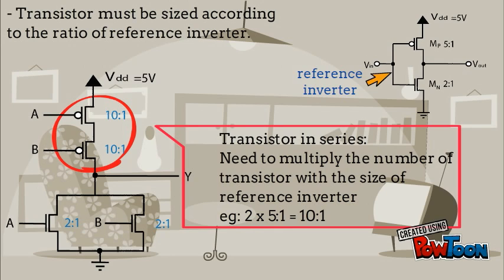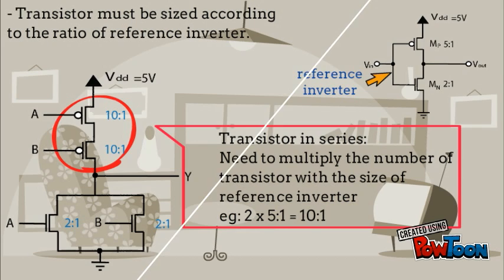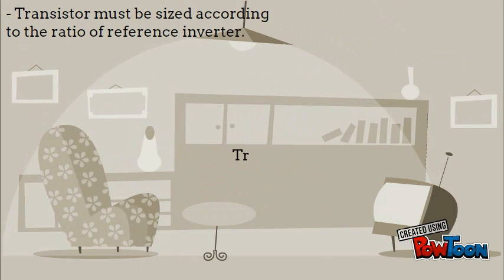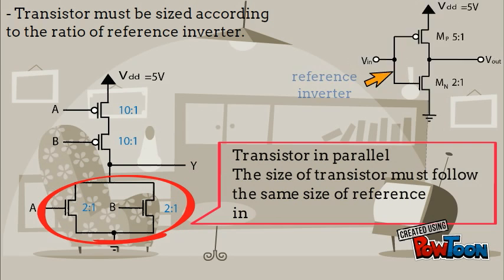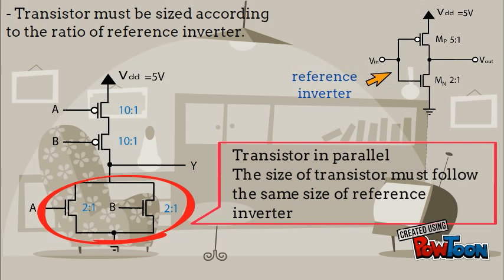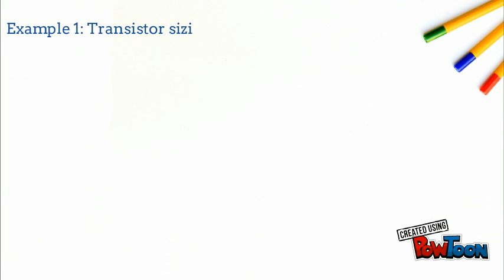For example, for transistors in series: 2 times 5-to-1 ratio equals 10-to-1. For transistors in parallel, the size of each transistor must follow the same size as the reference inverter. Example: 3 times 5-to-1.